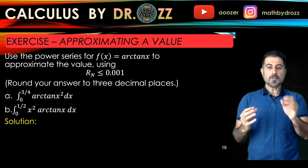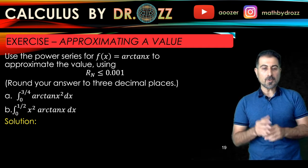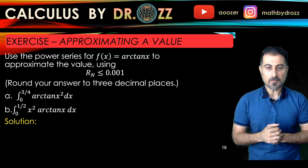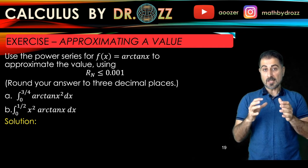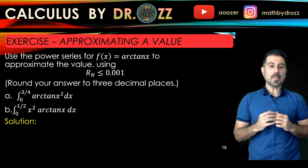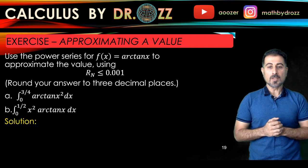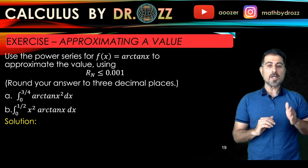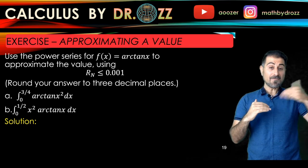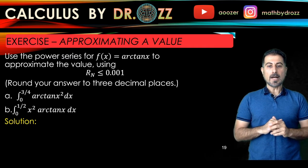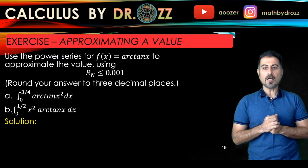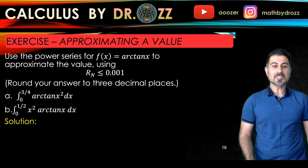To achieve our goal, for each integrand we are going to find a different power series by using the power series of arc tan x. First we need the power series of arc tan x, and hopefully at the end we'll have good approximations of these integrals with error not more than 10⁻³. We're approximating an integral value by the power of power series. I have one video for each sub-question, so let's get started.